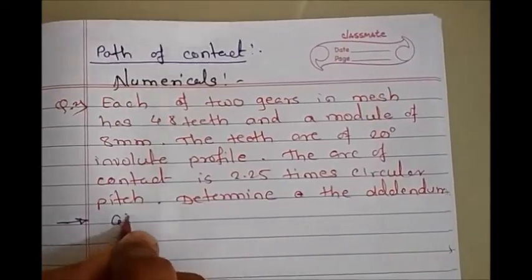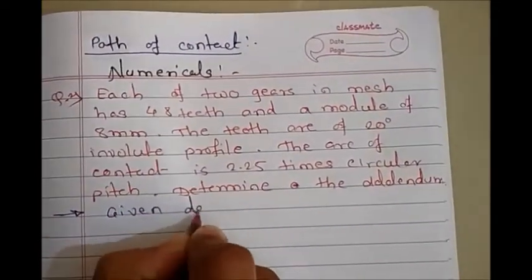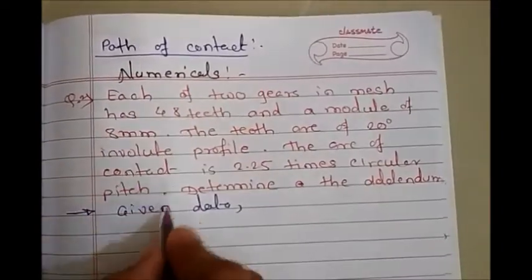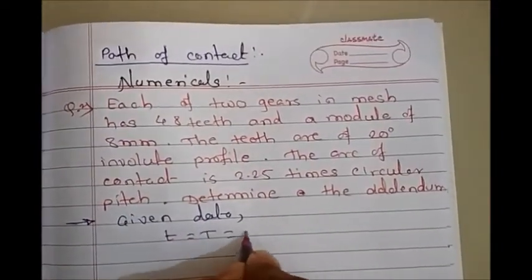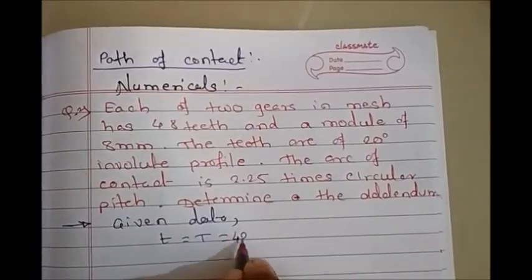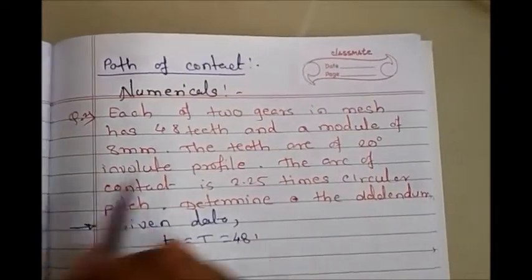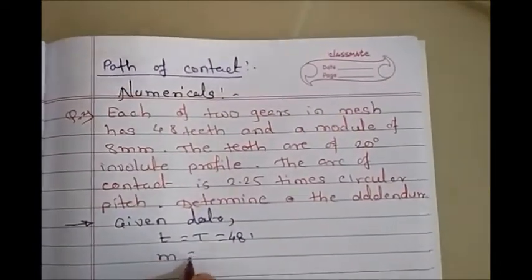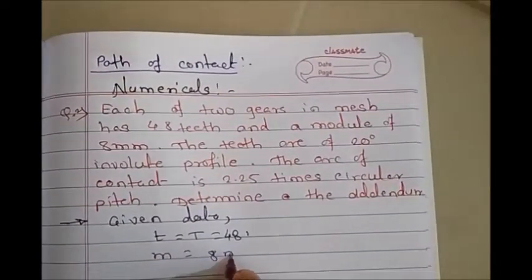The number of teeth for each gear is given, that is small t equals capital T equals 48. A module of 8 mm is also given, so small m equals 8 mm.